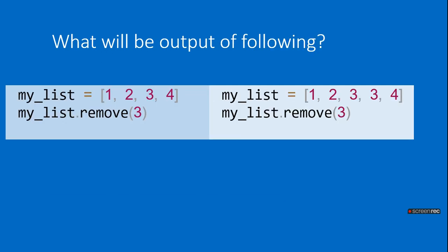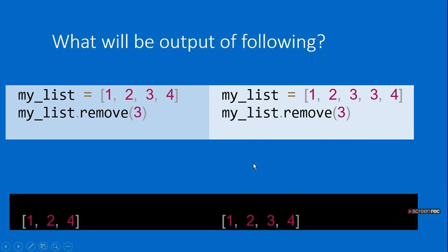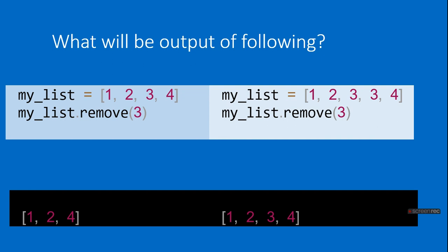What will be the output of the following? my_list = [1, 2, 3, 4] with remove(3), and my_list = [1, 2, 3, 3, 4] with remove(3). This is a little tricky. The first list gives [1, 2, 4] and the second list gives [1, 2, 3, 4] — it removes only the first occurrence of 3.